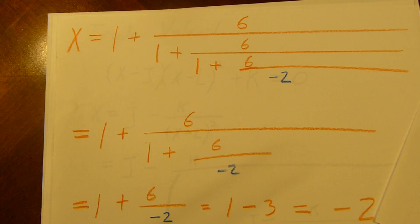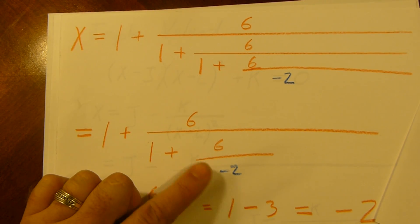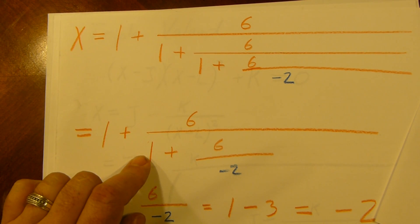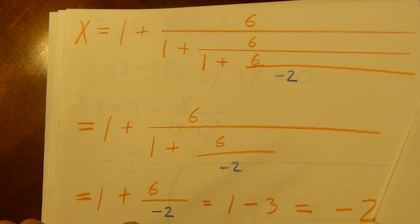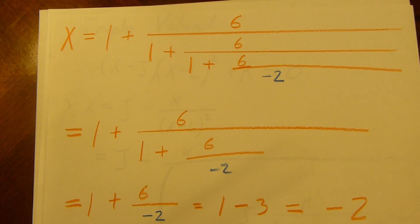6 over negative 2, that's going to be negative 3. 1 plus negative 3 is negative 2. So we're back down to here now. 6 over negative 2, that's negative 3. Plus 1 is negative 2. So we're 6 over negative 2, that's negative 3. So 1 minus 3 is negative 2. I want to point this out. And it will seem very strange. To me it is very strange and fascinating.